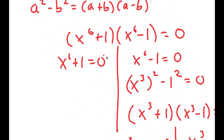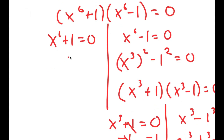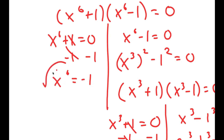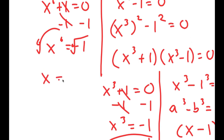For x to the power of 6 plus 1 equals 0, I subtract 1 on both sides to get x to the power of 6 equals negative 1. Taking the 6th root, I get x equals the 6th root of negative 1, which is equal to negative 1 to the power of 1 over 6.